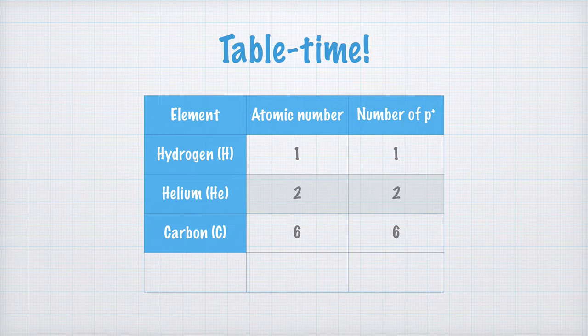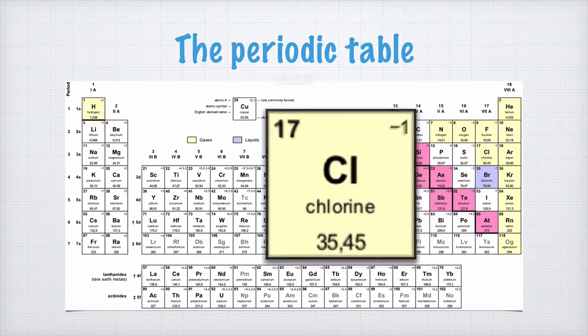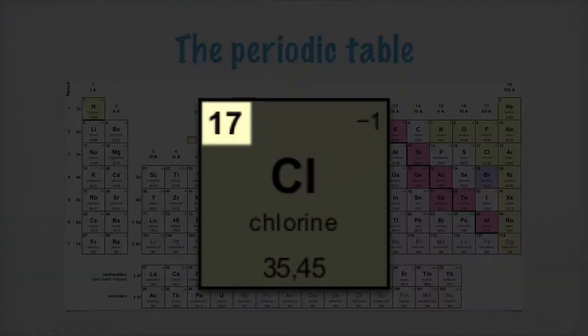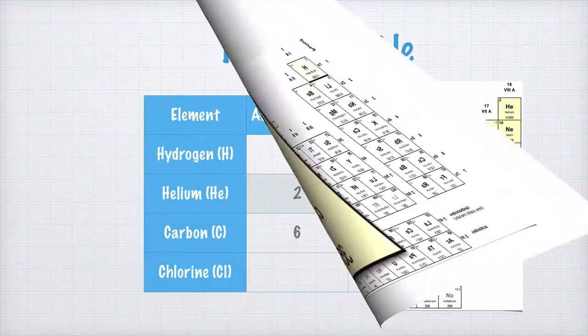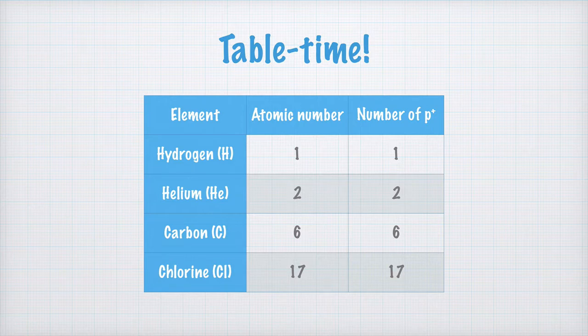Just one last example before moving on: chlorine this time. We have chlorine over here in the periodic table, and we promptly find the atomic number 17. In our table, we write that the atomic number is 17, and then we automatically know that the number of protons is 17. The number of protons is equal to the atomic number.